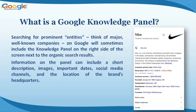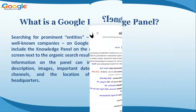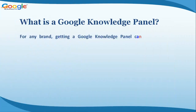Searching for prominent entities — think of major, well-known companies — on Google will sometimes include the knowledge panel on the right side of the screen, next to the organic search results. Information on the panel can include a short description, images, important dates, social media channels, and the location of the brand's headquarters.